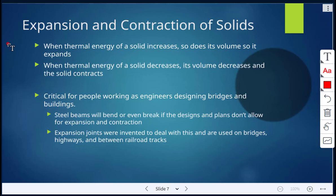This is critical for people that work as engineers designing bridges and buildings. Steel beams, for example, will bend or even break if the designs and plans don't allow for the expansion and contraction. Sometimes expansion joints are used. These were invented to deal with expansion and contraction. They're used on bridges, highways, and between railroad tracks.